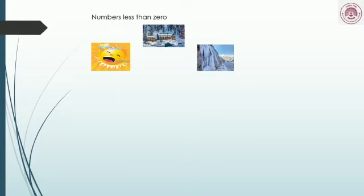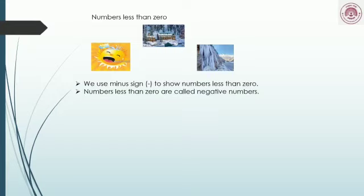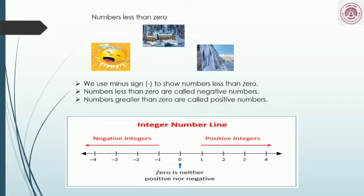But in Kashmir, the temperature may fall below 0 degrees centigrade. To show temperatures less than 0, we use the minus sign. Numbers less than 0 are called negative numbers, and numbers greater than 0 are called positive numbers.